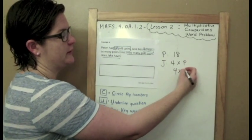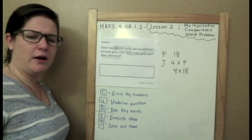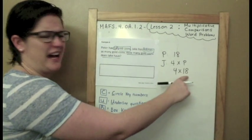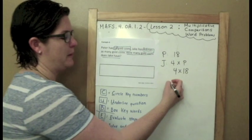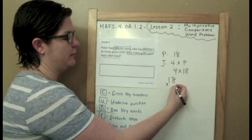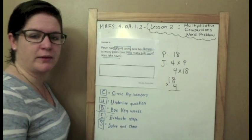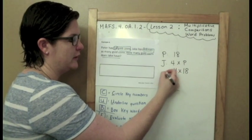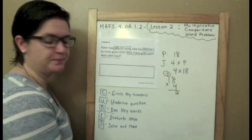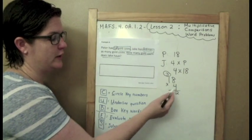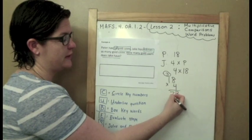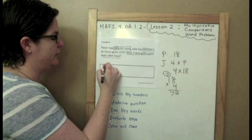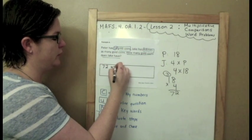So I got to do 4 times 18 to figure out how many gold coins Jake has. Now I don't like it written horizontally like that. I need to write this maybe vertically. And I know that when I put the greater number on top, it makes it easy for me. So let's do this: 8 times 4, 32. 1 times 4 is 4, add on my 3 which would be 7, so 72. So how many gold coins does Jake have? He has 72 gold coins.